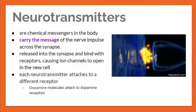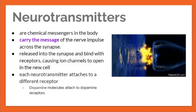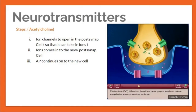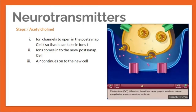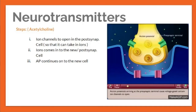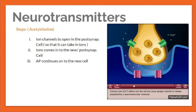Neurotransmitters are chemical messengers in the body that carry the nerve impulse message across the synapse. They are released into the synapse and bind with receptors, causing ion channels to open in the new cell. Each neurotransmitter attaches to a different receptor — for instance, a dopamine molecule attaches to a dopamine receptor. For acetylcholine: step one — ion channels open in the post-synapse to take in ions; step two — ions enter the post-synapse; step three — the action potential continues to the new cell.